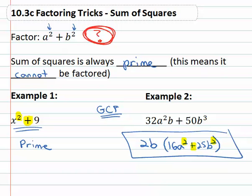So the best we can say is this is 2b times (16a² + 25b²). Do not continue to factor this. That is the cardinal sin of factoring—you cannot factor a sum of squares.